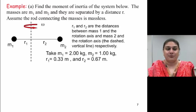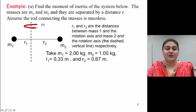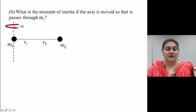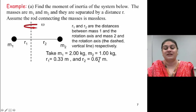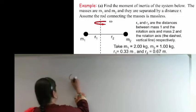So now let's look at this example. Find the moment of inertia of the system below. The masses are m1 and m2, and they are separated by a distance r. Assume the rod connecting the masses is massless. Okay, so now there are two masses, m1 and m2, and they are separated by a distance r. So that means from the axis of rotation, these have a distance r1 and r2. So if I take m1 as 2 kilograms and m2 as 1 kilogram, r1 is taken as 0.33 meters and r2 is taken as 0.67 meters, we can calculate the moment of inertia of this system. So let's draw the picture again on the board.